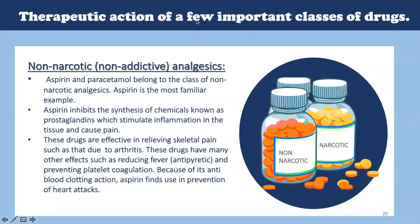As we classified analgesics into narcotic and non-narcotic, let's take a deeper understanding of each. First, the non-narcotic or non-addictive analgesics. Non-narcotic analgesics are medications that are used to control pain and inflammation. They are available at a drugstore without prescription, or by prescription when given at a higher dose. Aspirin and paracetamol belong to the class of non-narcotic analgesics. Aspirin is the most familiar — it inhibits the synthesis of chemicals known as prostaglandins which stimulate inflammation in the tissue and cause pain. Non-opioids like these are used to treat acute or persistent pain that is mild to moderate, and are also found in combination with other medications or therapies to treat moderate to severe pain.